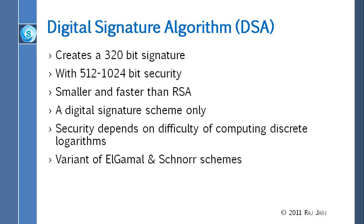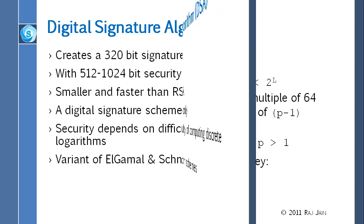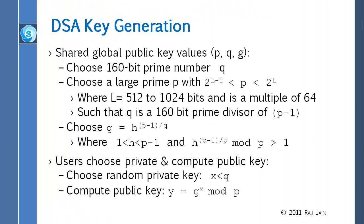Before we go to the details, the signature is 320 bits, which is twice the hash, because there are S and R. 512 to 1024 bit security. It is smaller and faster than RSA. RSA would require a lot many more bits. And it is only for signature, and it's a variant of ElGamal and Schnorr.